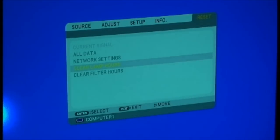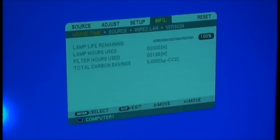You can move back up the menu and then to the left to highlight info. This will confirm that the lamp hours are correctly set at zero and the lamp life is at 100%. The task is now complete and the projector can be remounted.